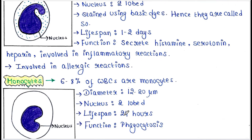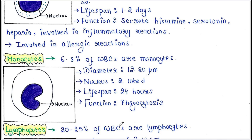Monocytes: 6 to 8 percent of WBCs are monocytes. Diameter 12 to 20 micrometers. Nucleus is 2 lobed. Lifespan 24 hours. Function: phagocytosis.